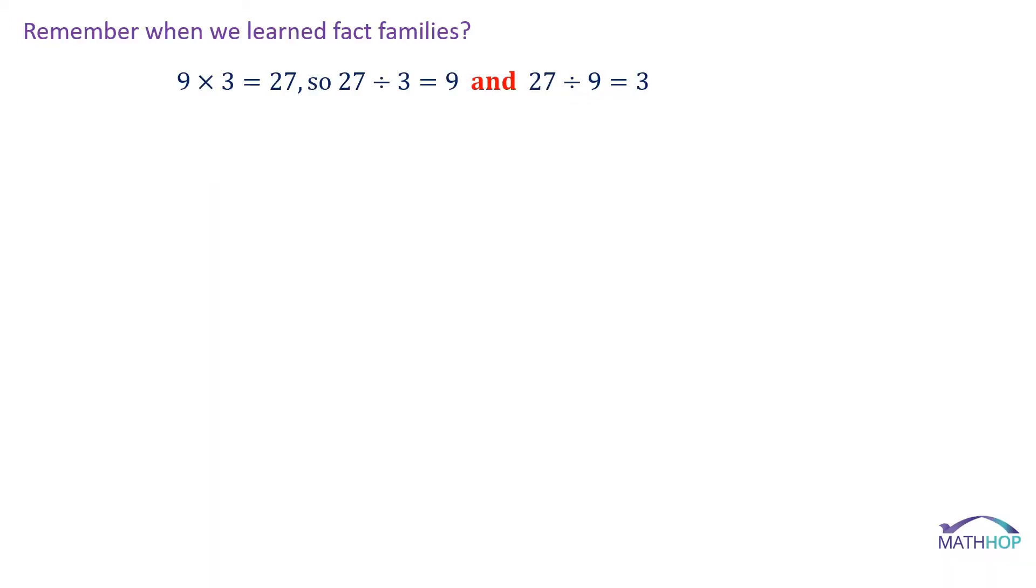Remember when we learned fact families, we learned 9 × 3 = 27. So if we had nine groups of three things, we had 27 of those things. Therefore, if we took those 27 things and put them in groups of three, there'd be nine groups of them. And if we took 27 things and divided into groups of nine, there'd be three groups with nine in each. So we learned that division and multiplication were opposite operations or they undid each other.